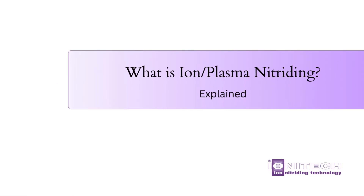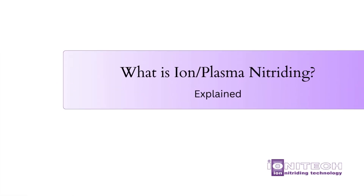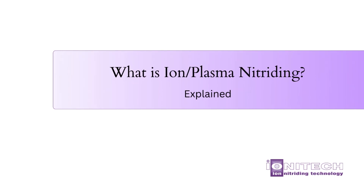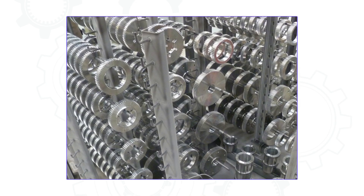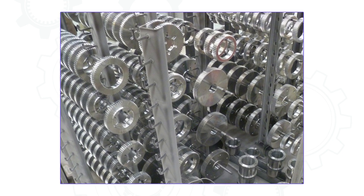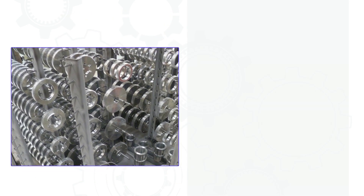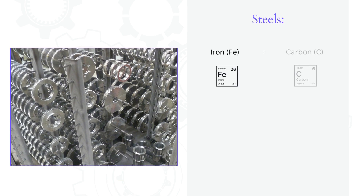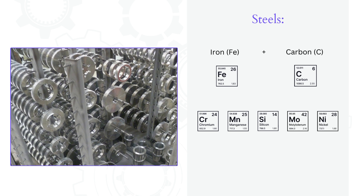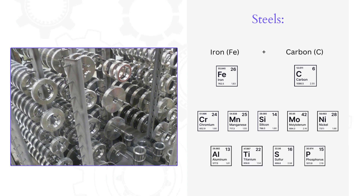But what exactly does this mean? Let's start from the beginning to explain the concept. Let us take these gears made out of steel and look into them. Steels are made of iron and a small amount of carbon. Alloying elements such as chromium, manganese, silicon, molybdenum, nickel, and others are usually added in order to increase the properties of the steels.